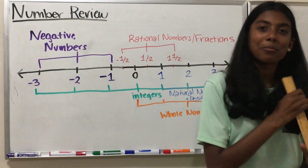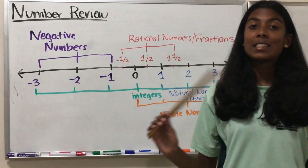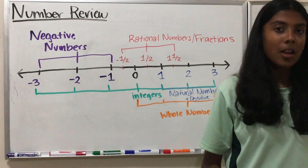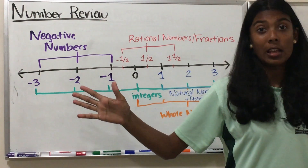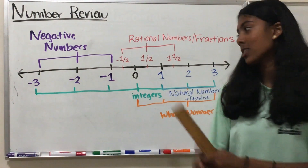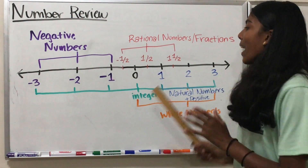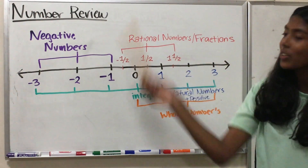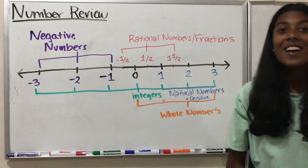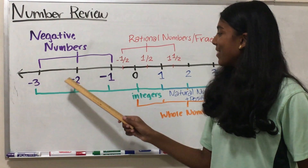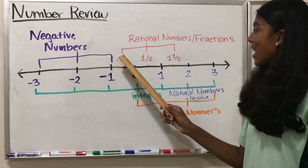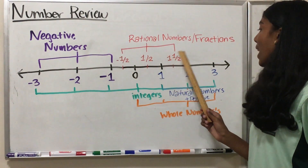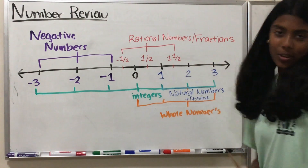Our last part of the number review is the number line. This is only a part of a number line because the number line is infinite in both directions — that's why it's called a line. On our number line, we have the numbers negative 3, negative 2, negative 1, negative 1 half, 0, 1 half, 1, 1 and 1 half, 2, and 3.